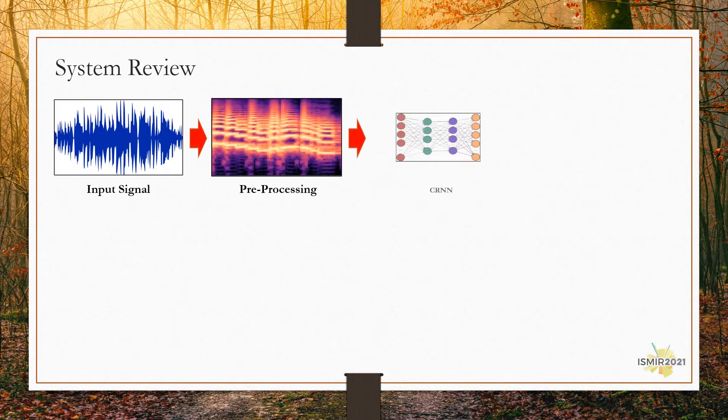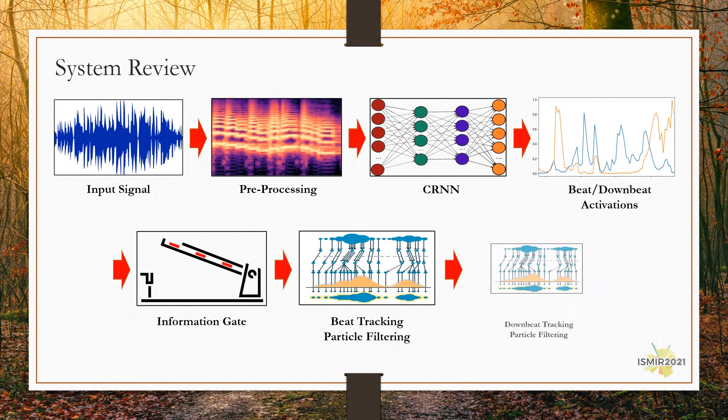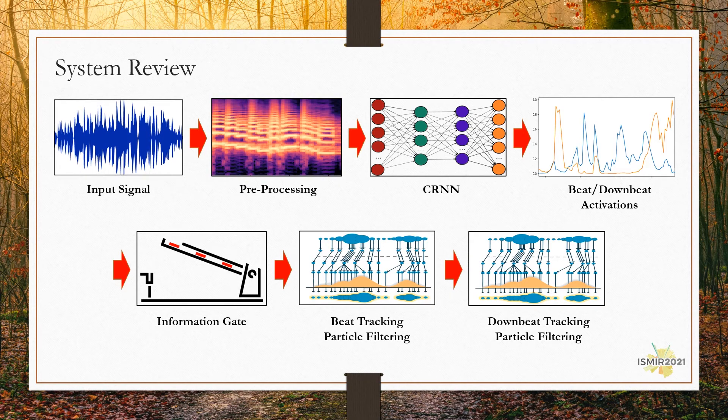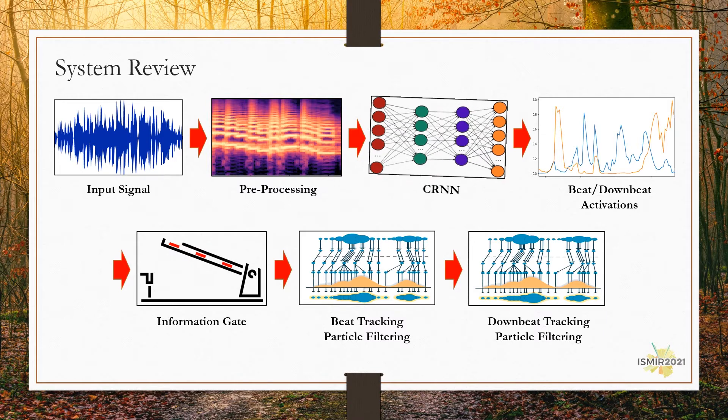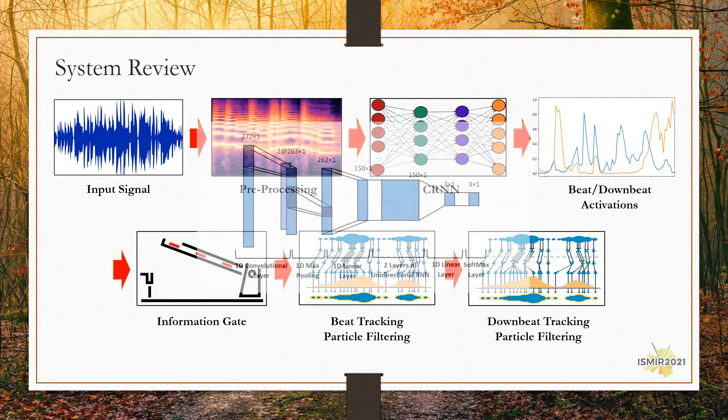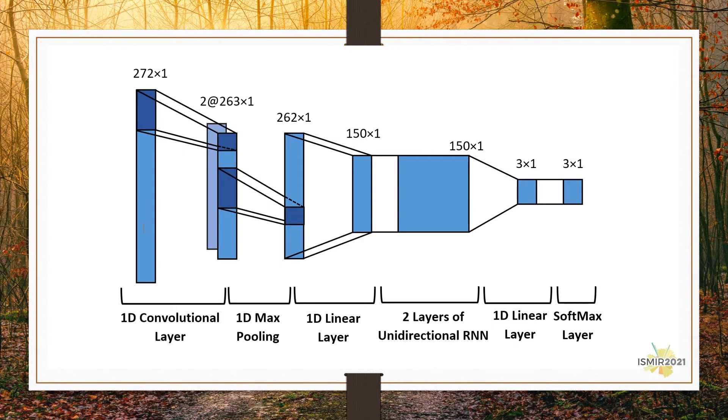Here is the BeatNet pipeline. The system input is a raw audio waveform. The pre-processing step takes the information to the frequency domain frames with 20ms time granularity before feeding them into the neural network plug. The neural network comprises causal, convolutional and recurrent layers to ideally model the dependencies across both frequency and time domain. The neural network delivers three outputs for each timeframe: beat activation, downbeat activation and nonbeat activation.